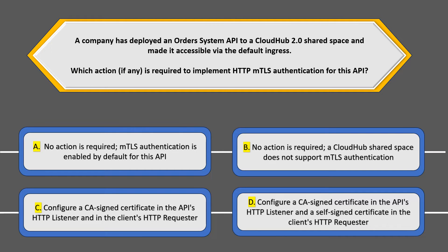The question states that a company has deployed an Order System API to CloudHub 2.0 shared space and made it accessible via the default ingress. The question asks what actions are required to implement HTTP mTLS authentication for this API.